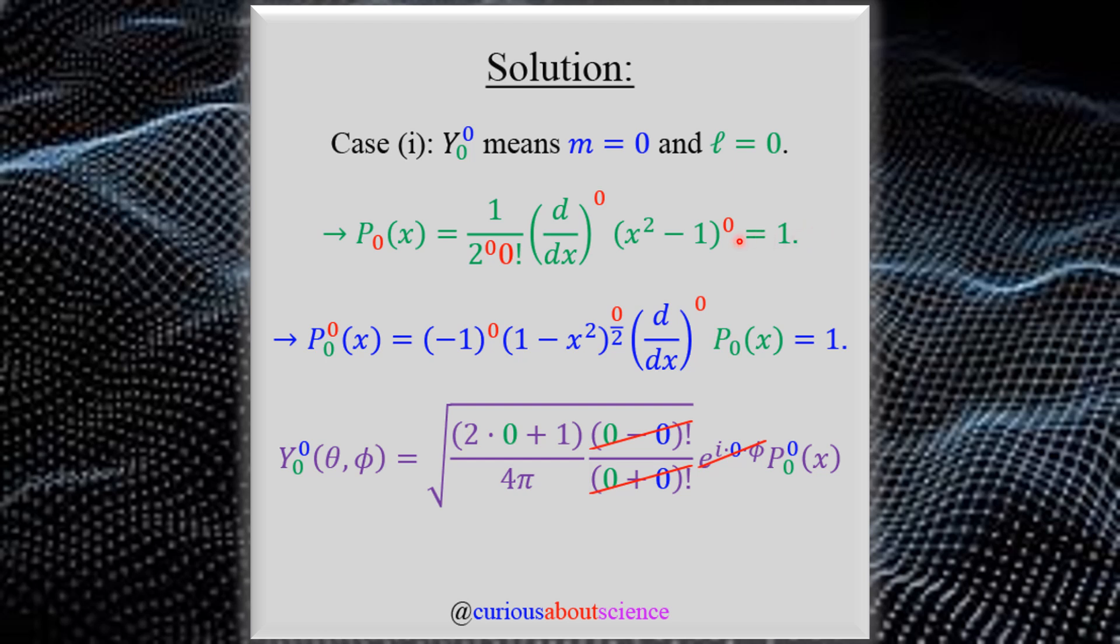Not too bad. If we plug this P of 0 of X into the associated function, the blue function, we see that we get a whole bunch of 0 powers again, which turns to 1, this turns to 1, and this turns to 1, all multiplied by 1. Well, of course, we get 1 back.